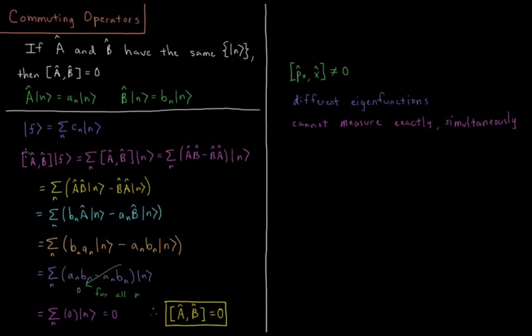So let's have our commutator of A and B act on function F. This will be a sum over all values of N of the commutator acting on basis function N, which is an eigenfunction of both of them. So a sum over all N of AB minus BA acting on N. We can distribute this AB minus BA. We have the sum over all N, AB acting on N, minus BA acting on N.